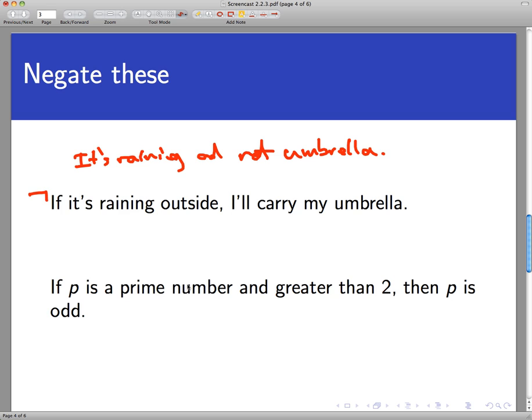Again, it is not an if-then statement, it's an and statement. It's more like an assertion than a promise, and we're going to get to that a little more deeply in the next slide. Second statement says, if P is a prime number and greater than 2, then P is odd. Now if I were going to negate that statement, I would make an assertion, I would make an and statement.